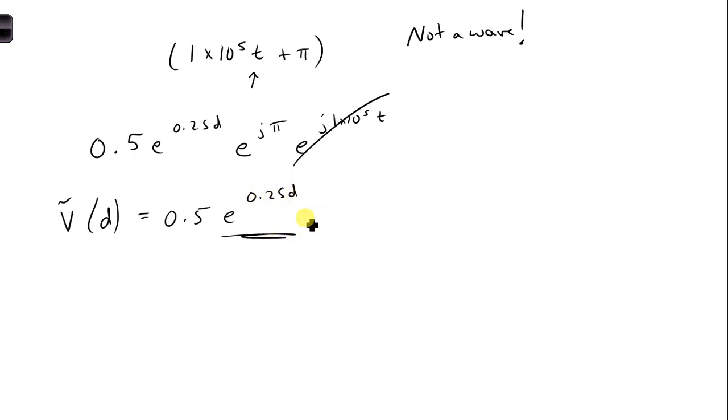Now let's take a moment. Okay, I'll write the rest of it: E to the J pi. Let's take a moment and look at this term. There's no J in front of it. So what this represents is that we have either... Well, if it's a plus here, it's an increasing exponential.